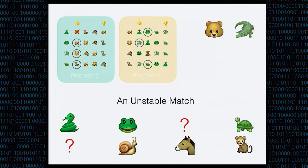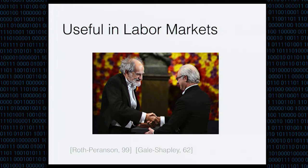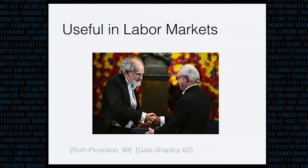This simply wouldn't do. It turns out that this concept of stability is extremely useful in labor markets — so much so that Alvin Roth and Lloyd Shapley won a Nobel Prize for it in 2012. Today it's used to match doctors to hospitals every year, as well as students to universities and high schools in other countries. There are, however, a couple of caveats in practice, and the most important one is privacy of preferences.